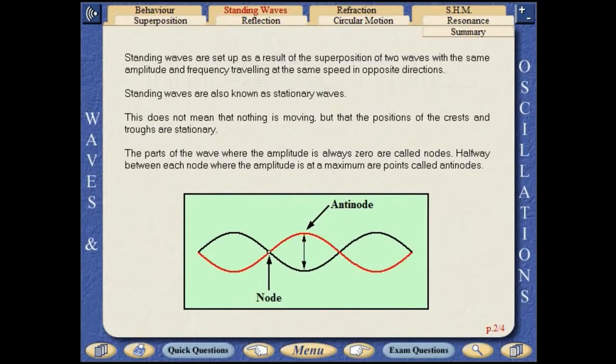Standing waves are set up as a result of the superposition of two waves with the same amplitude and frequency travelling at the same speed in opposite directions. Standing waves are also known as stationary waves. This does not mean that nothing is moving, but that the positions of the crests and troughs are stationary.